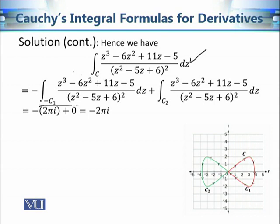The main contour integral equals minus the integral along −C1 plus the integral along C2, which is −2πi + 0 = −2πi. That is how we apply Cauchy-Goursat theorem, Cauchy's integral formula, and Cauchy's integral formula for derivatives together in the evaluation of this otherwise very complicated contour integral.